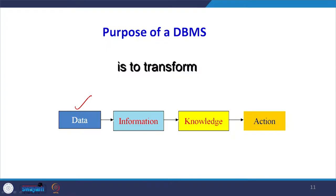DBMS transforms data collected from different sources into information. That information is converted into knowledge based on certain decisions and rules, and that knowledge is then converted into action — some kind of output, recommendations, or desired results. Once we have the desired results, those results are converted into actions: either management actions or conservation measures.